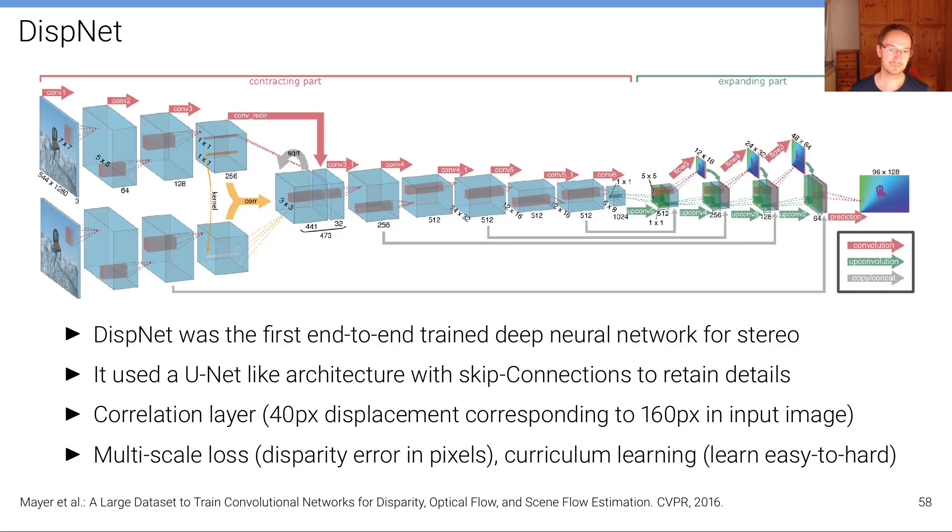The first model in this context that basically spurred an entire field is called DispNet. It was the first end-to-end trained deep neural network for stereo. The input, it's very similar to the FlowNet model, is a pair of images, left-right images.